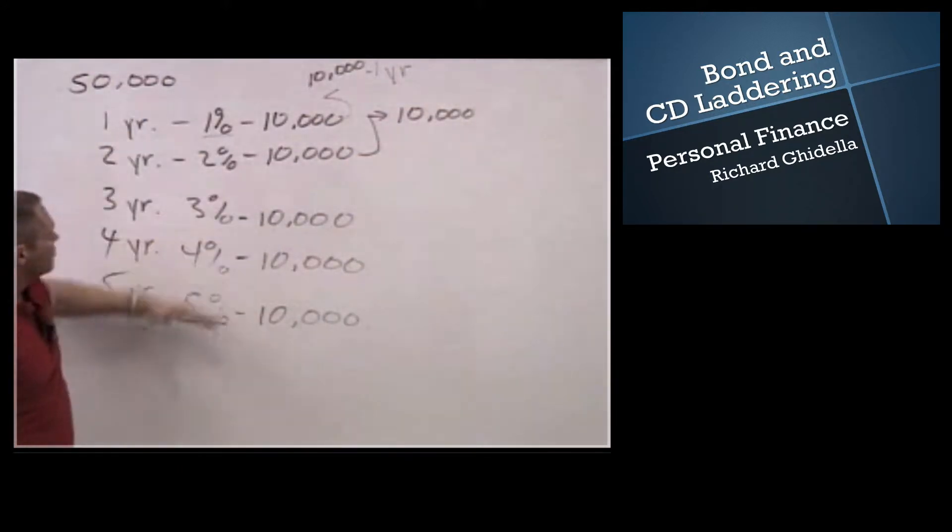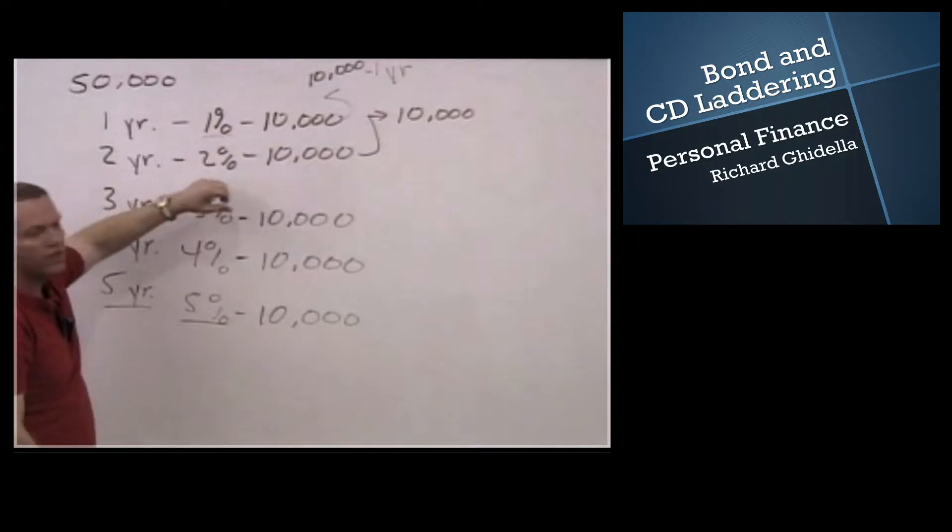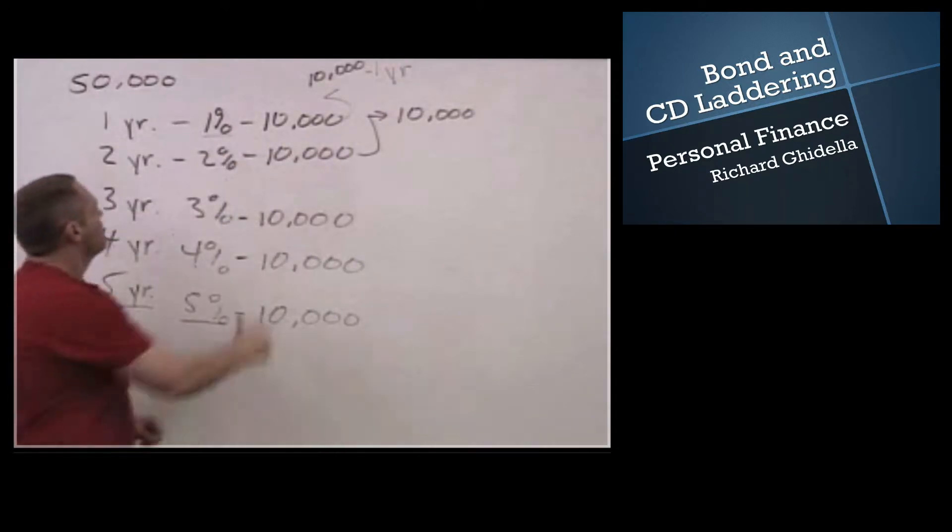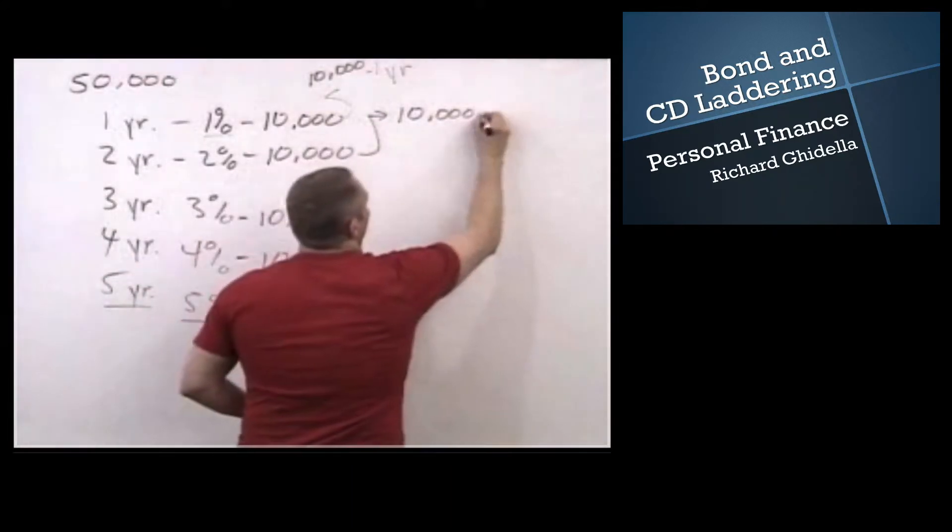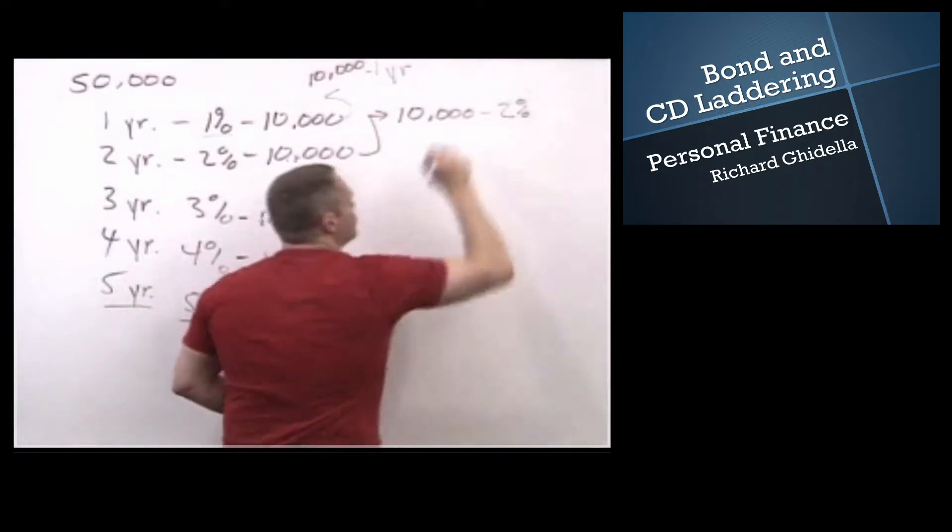These interest rates, when you first establish them, are fixed. 99% of the time, they're fixed. There are some CDs out there that have some flexible interest, but predominantly not. But this two year CD that has one year to go now yields 2%.